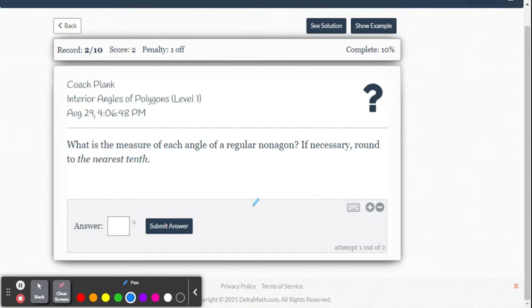And this problem says, what is the measure of each angle of a regular nonagon, if necessary round to the nearest tenth. So this is the same problem we just had. But last time it said like a 24-gon, this time it gave us a name. Let's say you're not familiar with that name. Google it real quick. And you'll find that that's a polygon with nine sides and nine interior angles.